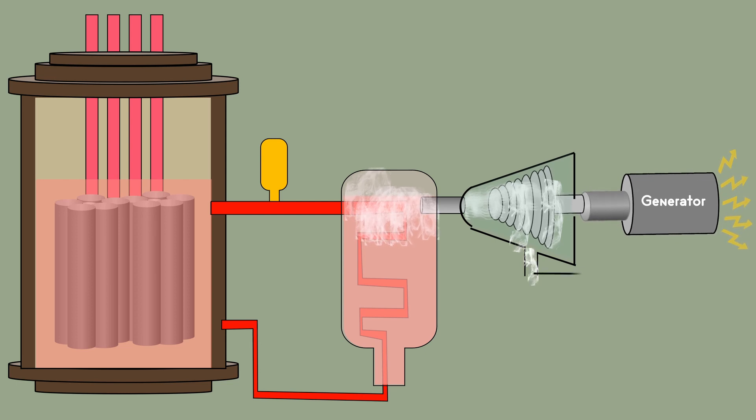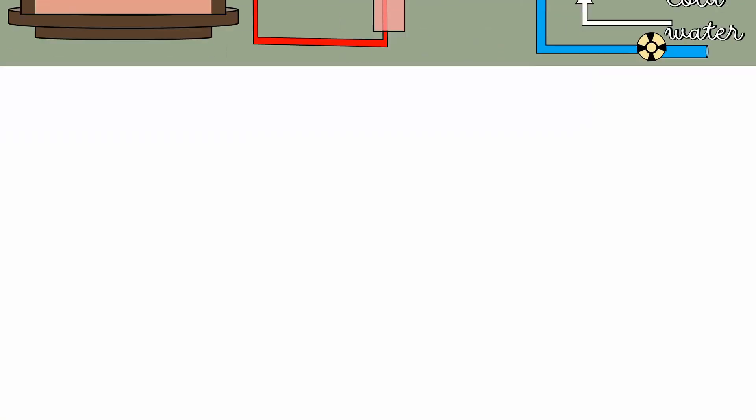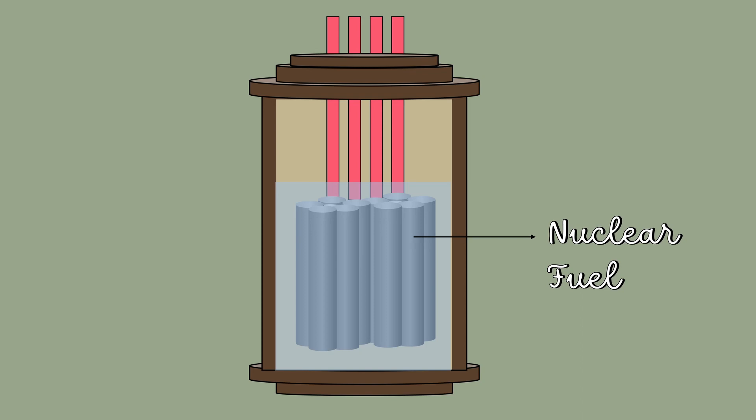The steam is then converted into water in the condenser by exposure to cold water. The output from the condenser is fed back into the steam generator. Nuclear fuel is typically used in a reactor for 3 to 5 years.